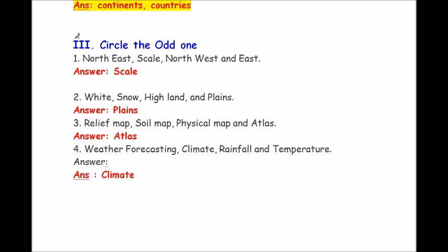Roman number 3, circle the odd one. Question 1: northeast, scale, northwest and east. Answer is scale. Question 2: white, snow, highland, plains. Answer is plains. Question 3: relief map, soil map, physical map, atlas. Answer is atlas.